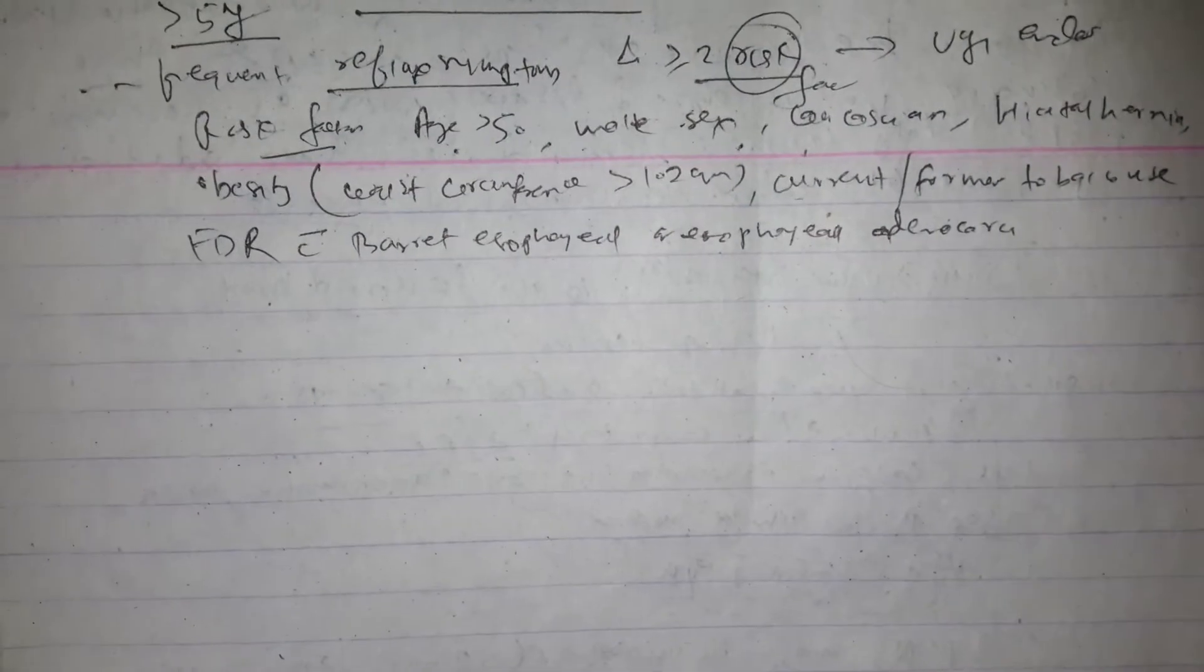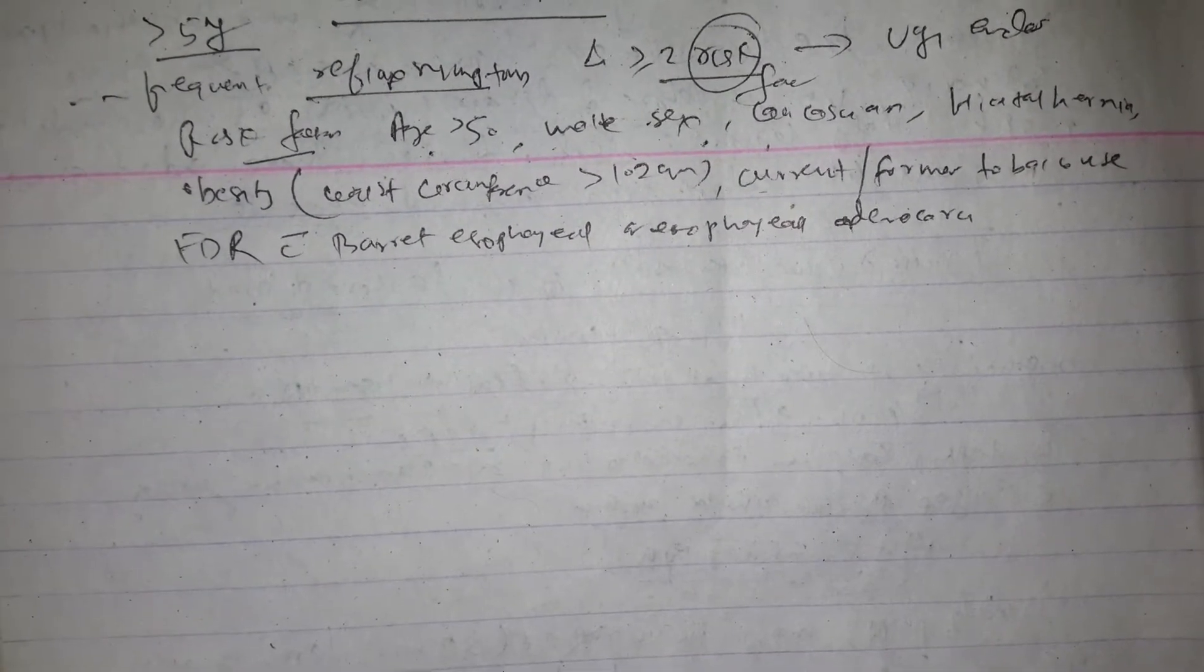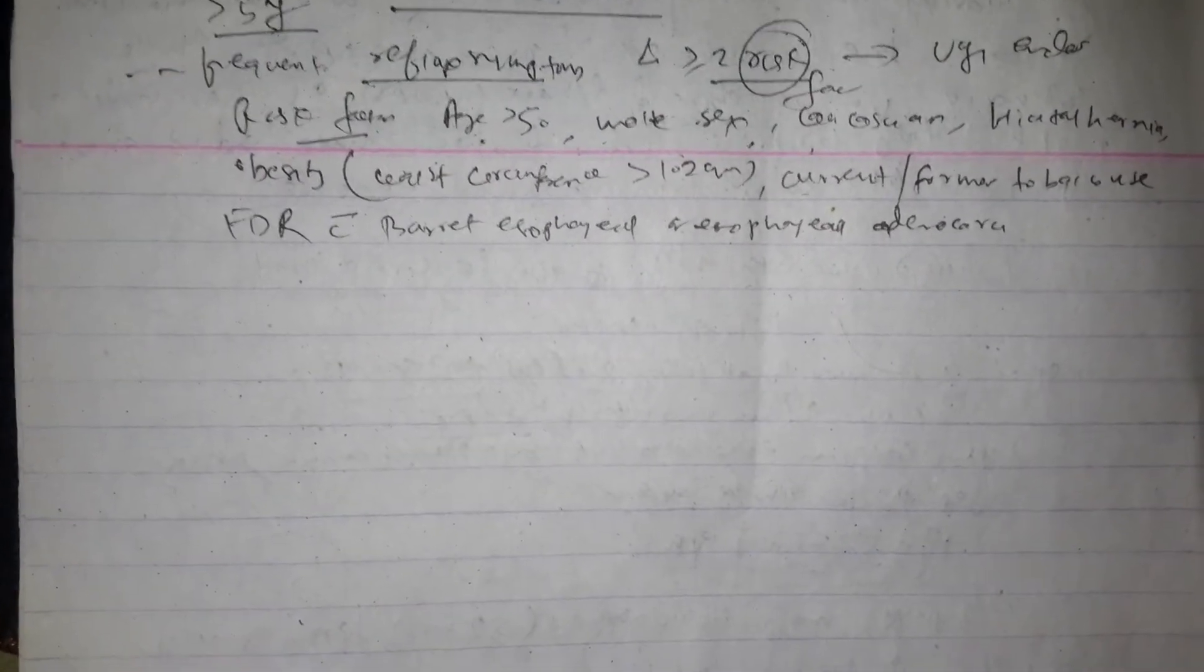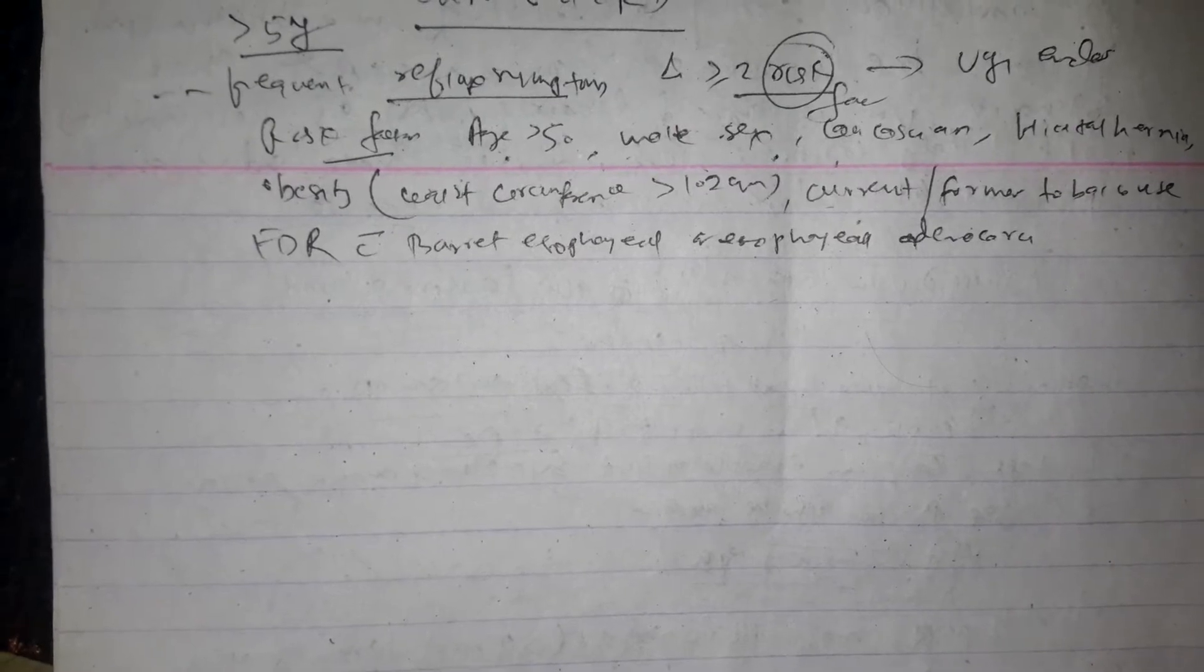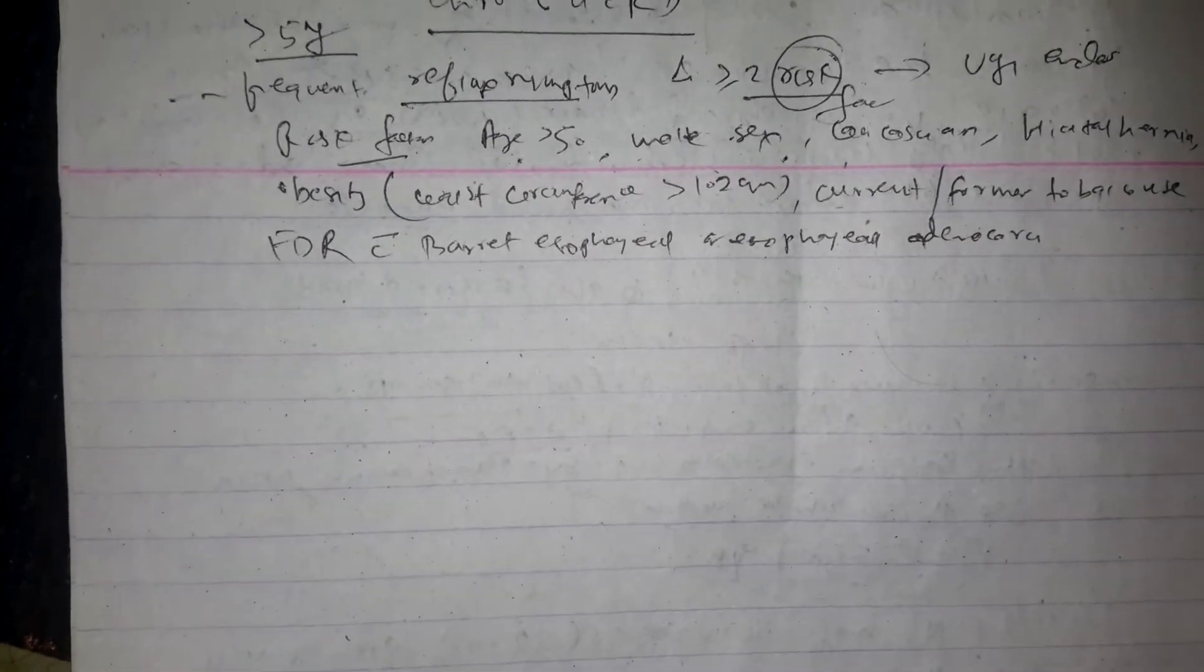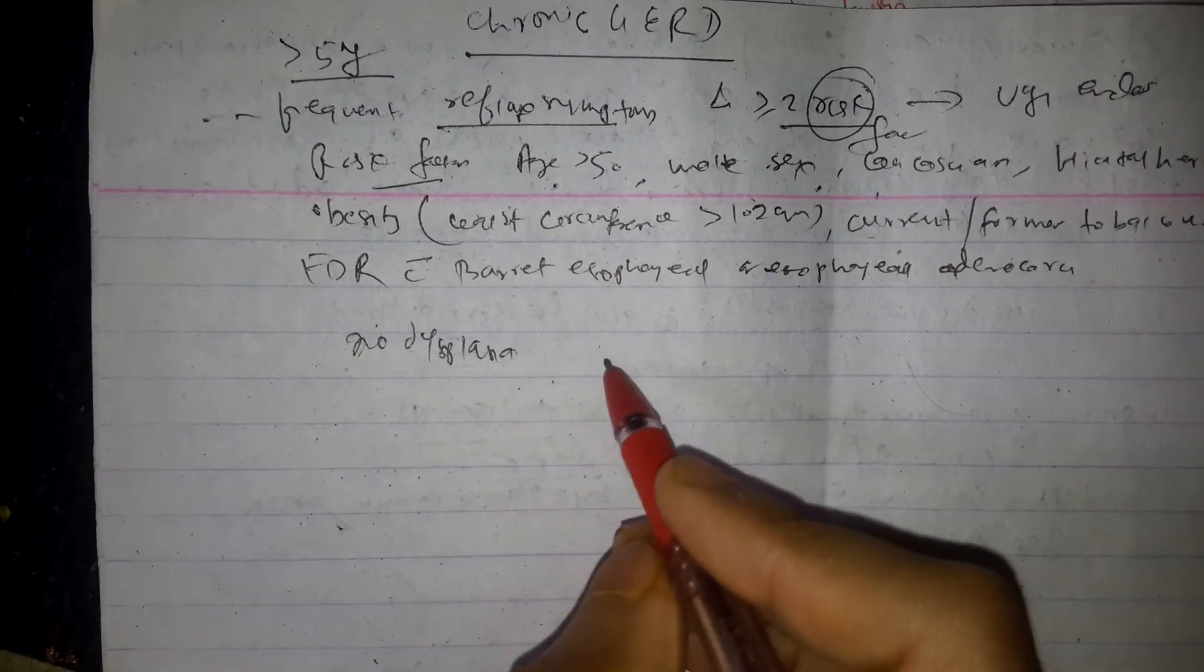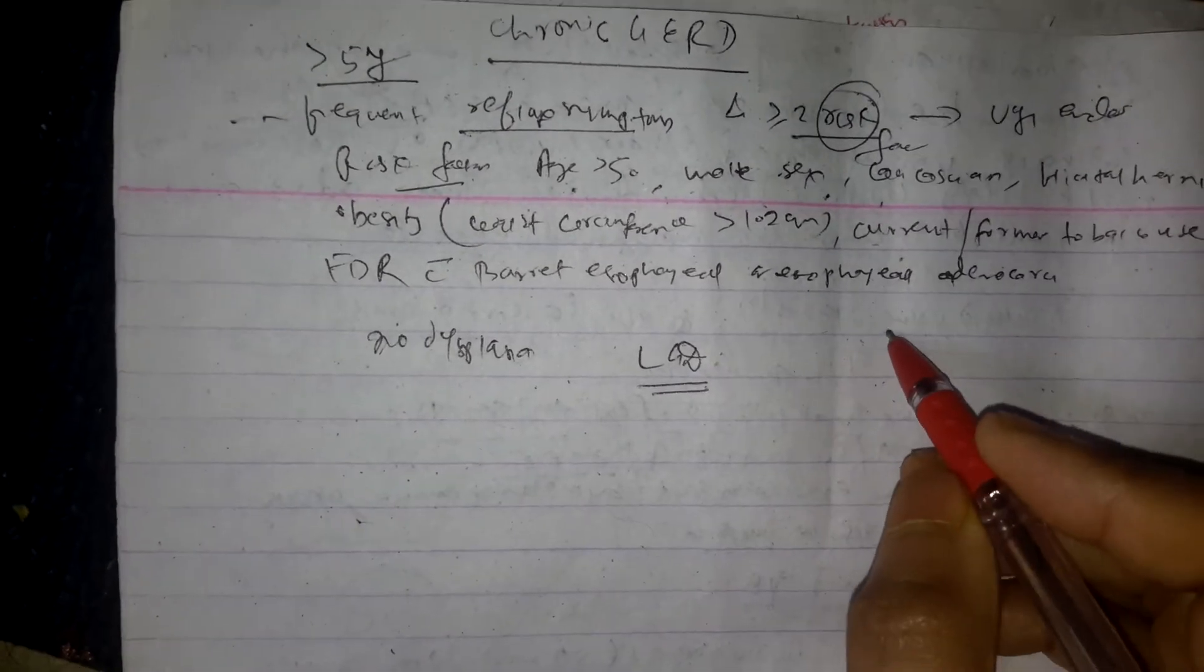And if endoscopy shows columnar lined esophagus and esophageal biopsy shows intestinal metaplasia, that is Barrett esophagus. So when you do endoscopy, either you find no dysplasia or you may find low grade dysplasia if you do biopsy, or it can be high grade dysplasia.